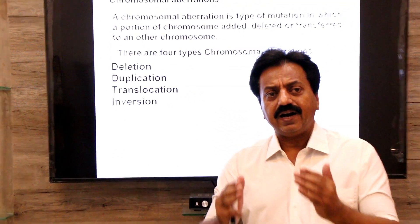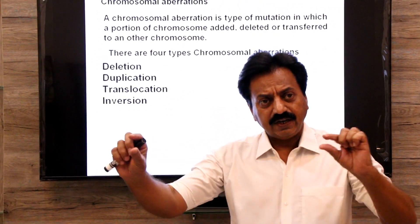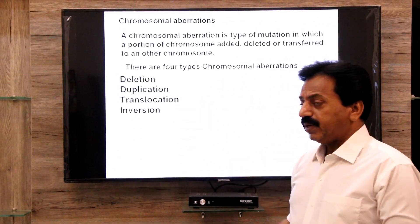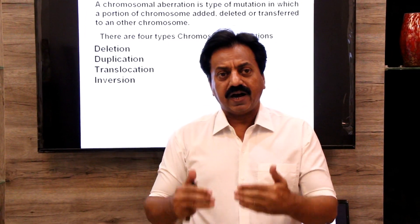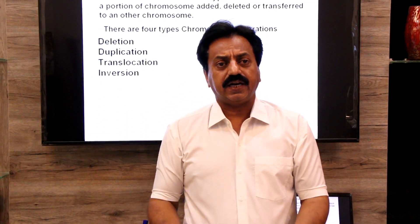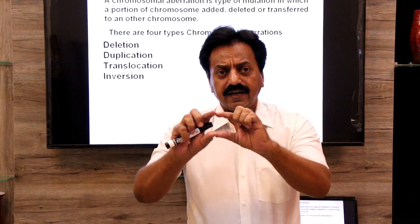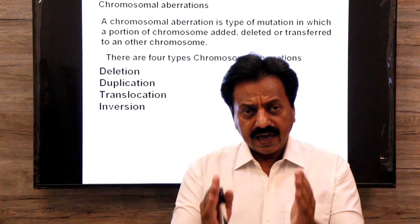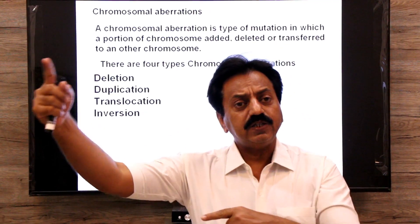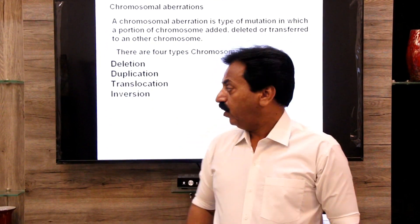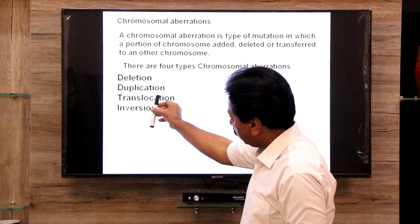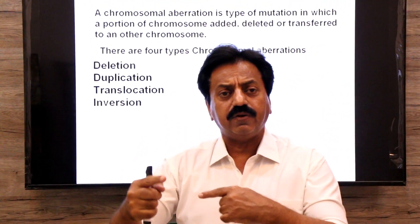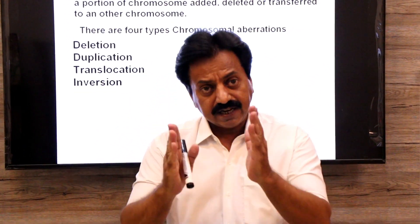In deletion, a segment of the chromosome is deleted, causing many genes to be lost. In duplication, a segment of the chromosome is repeated, and the chromosome will have an extra amount of genetic material. In translocation, a segment of one chromosome is transferred to another chromosome. And in inversion, the chromosome flips over and its sequence becomes inverted.